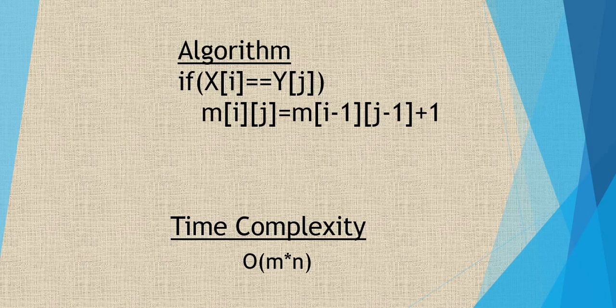Here is the algorithm: if x[i] equals y[j], where x and y are the two strings, then the matrix cell M[i][j] equals M[i-1][j-1] plus 1 — that is, the diagonally opposite cell plus 1. The time complexity of this dynamic programming problem is O(m × n). With this, we have come to the end of this video. I hope you enjoyed watching and learned from it. I'll see you in the next video of Joey's Tech. Thank you.